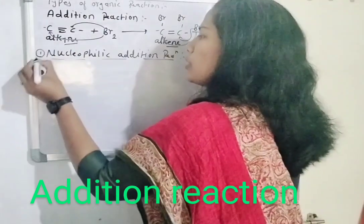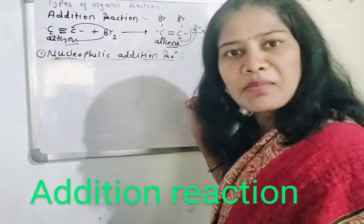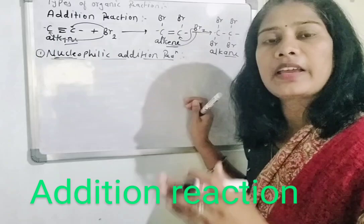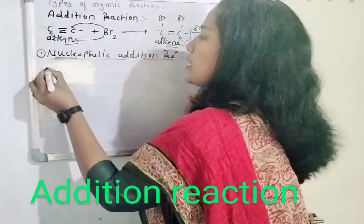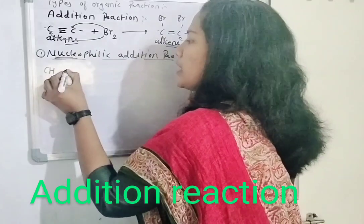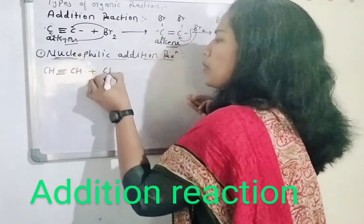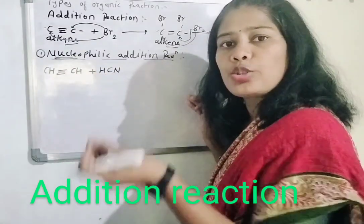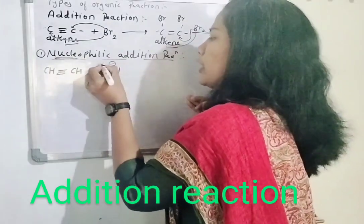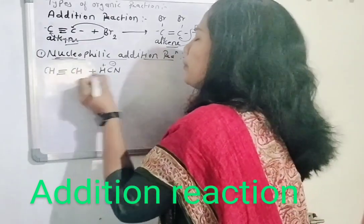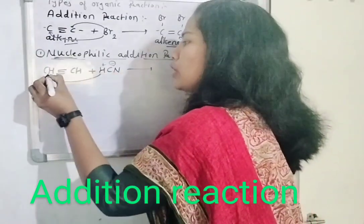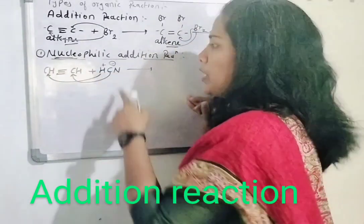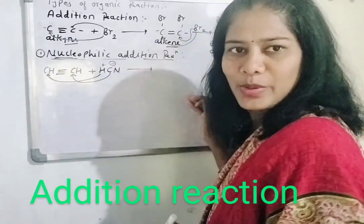What happens in nucleophilic addition reaction? Nucleophilic means addition of a nucleophile — a nucleophile will do the addition here. Consider we use the component CH≡CH. When this reacts with H-CN, where CN carries a negative charge and hydrogen carries a positive charge, hydrogen attacks the first carbon atom and CN goes to the second carbon atom — that is, a nucleophile is attacking here.